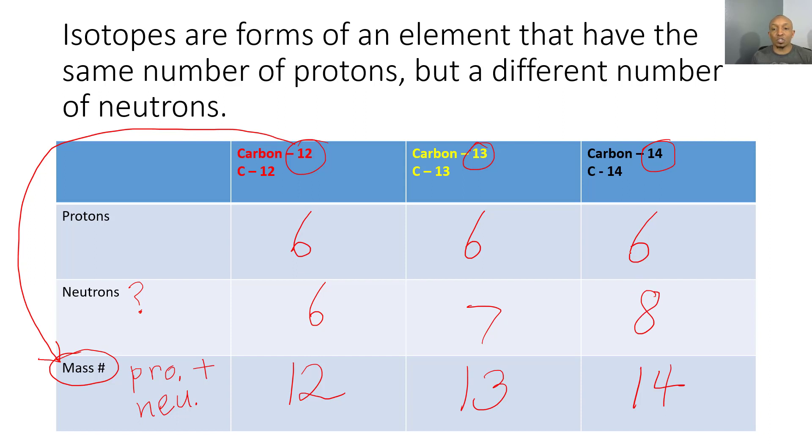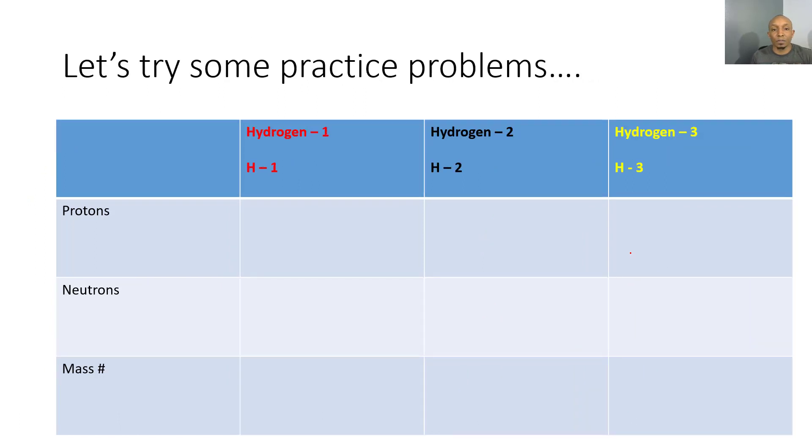Now that we've got the basics down, let's try a practice problem to make sure we have it. On this practice problem, we have hydrogen-1, 2, and 3. Once again, this number behind hydrogen is our mass number, and our mass number is the number of protons plus the number of neutrons.